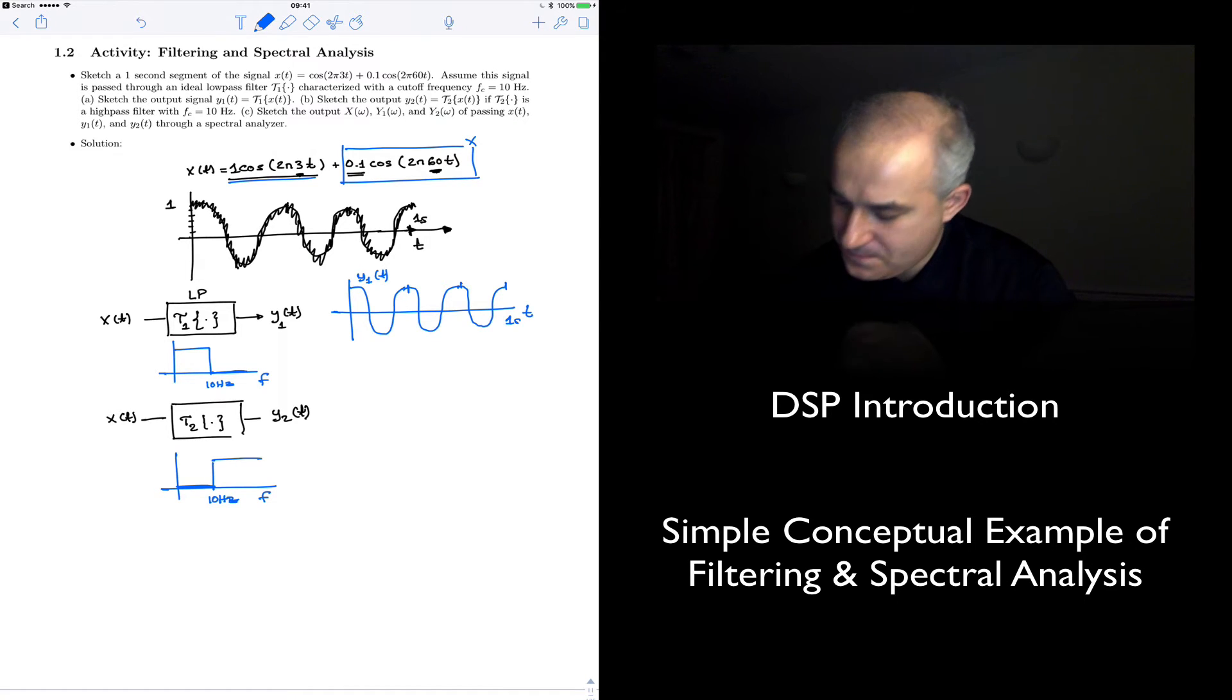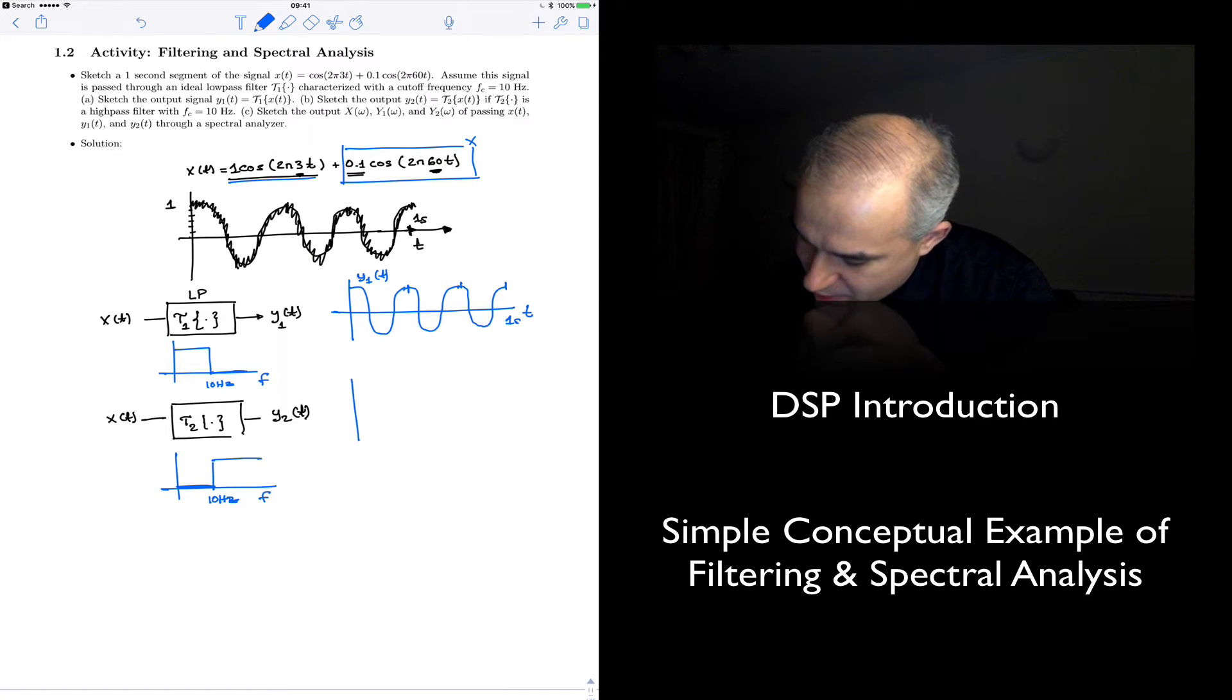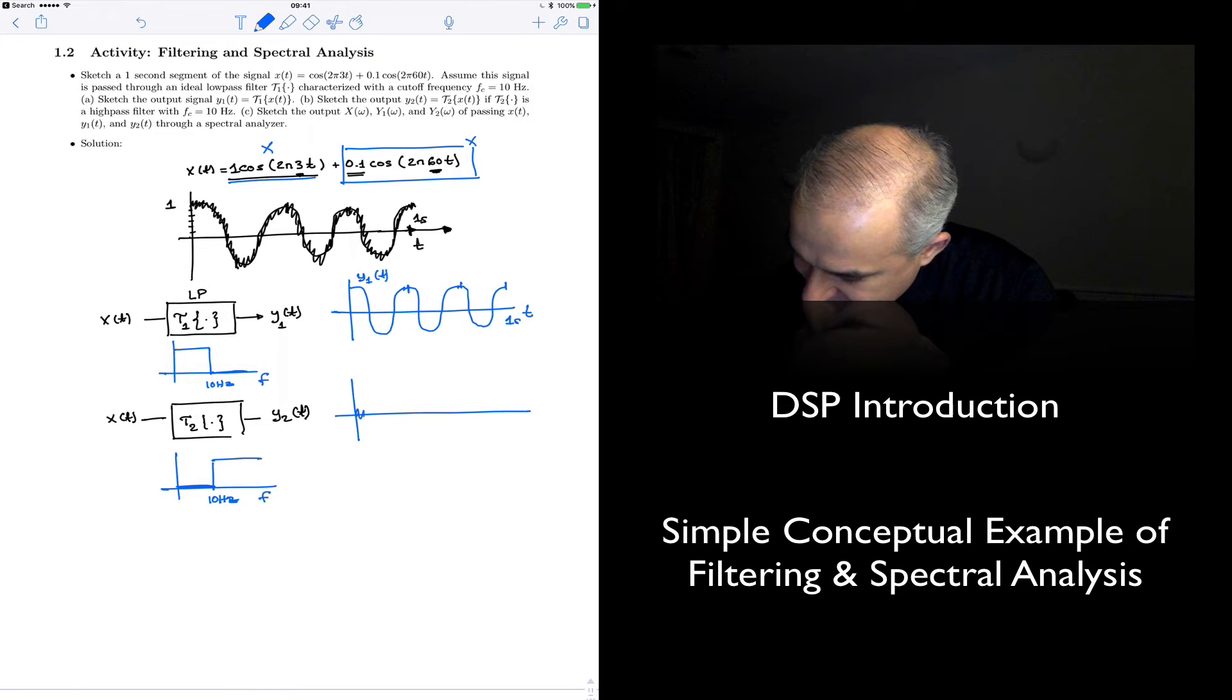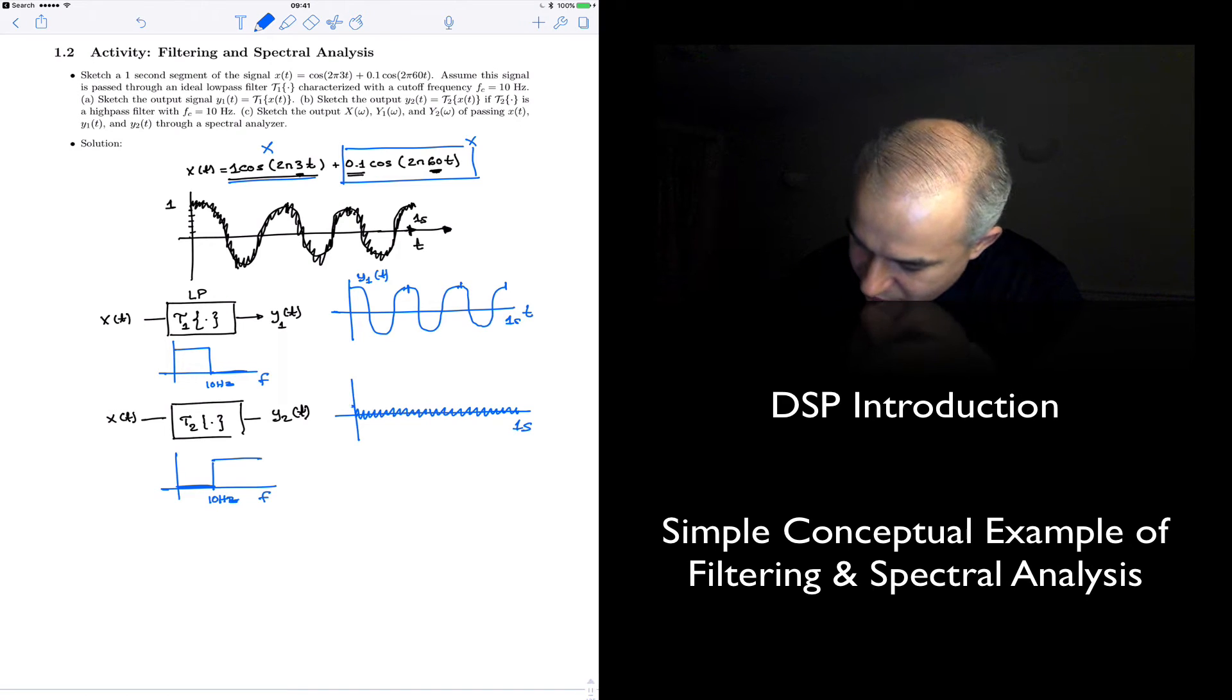Okay. And so, our output, it will cut the low-frequency component. And so, we will get something like this. Just the 60 Hz. Just think of this as having 60 cycles in one second. With an amplitude. In this case, the amplitude is 1. The amplitude here is 0.1.